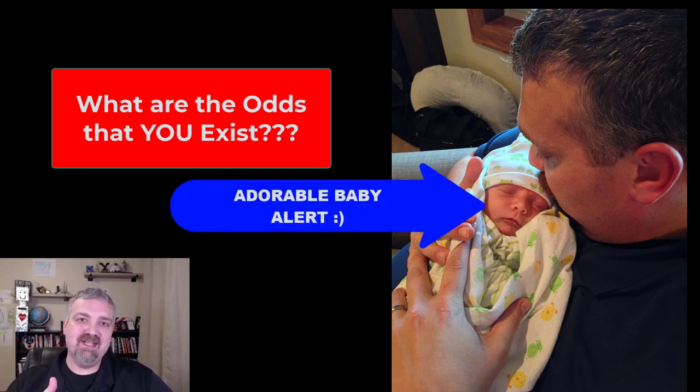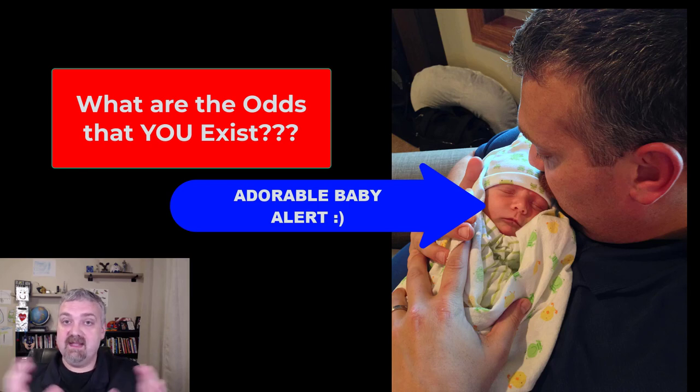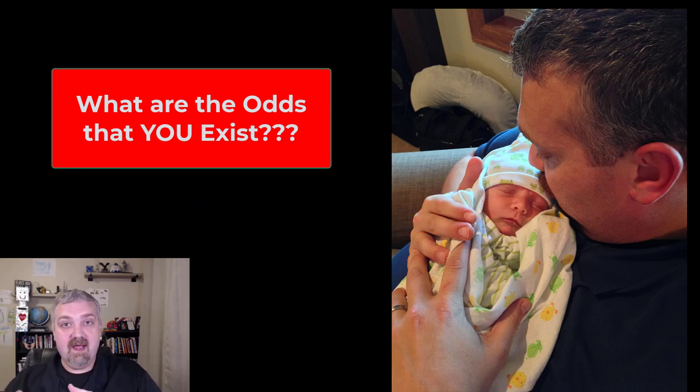So this is a little picture of Oliver. You'll see him a few times. This is probably one of the first pictures we have of him at home. So what are the odds that Oliver is Oliver and not somebody else? What are the odds that I'm here instead of somebody else and my wife, et cetera.